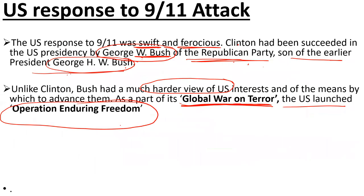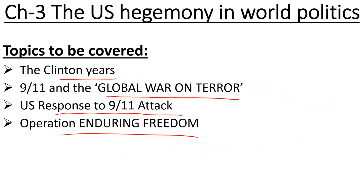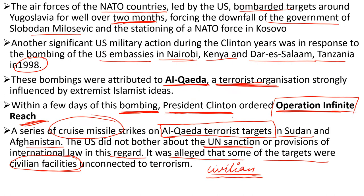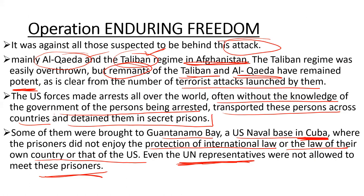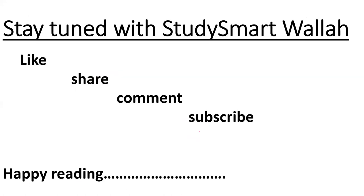So overall, today we covered four topics: the Clinton years and Clinton's soft approach to politics, then 9/11 and the Global War on Terror, the US response to the 9/11 attack including Operation Infinite Reach, and Operation Enduring Freedom. Please revise this chapter once again and try to recall everything. Stay tuned with Study Smartwala — like, share, comment and subscribe. We'll meet soon with a new video of the same chapter. Happy reading and take care. Bye.